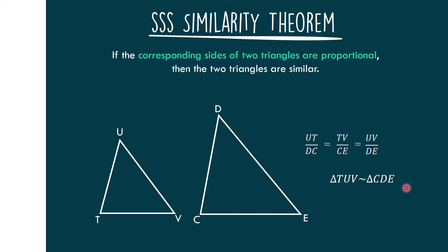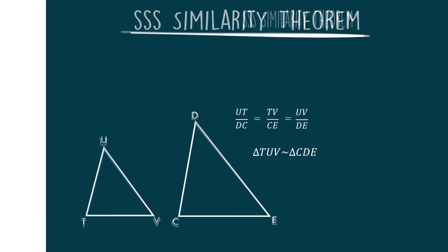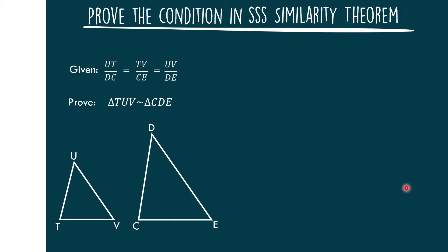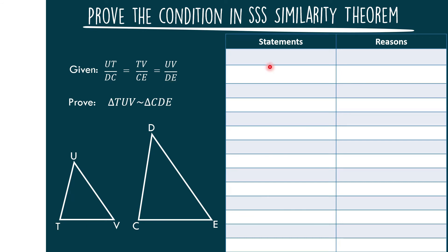So that is the informal approach. Let us now do a two-column proof. Let us prove that triangle TUB is similar to triangle CDE, given that UT over CD is equal to TV over CE and equal to UB over DE. Let us place point X on BC such that UT and BX are congruent.